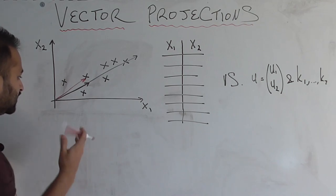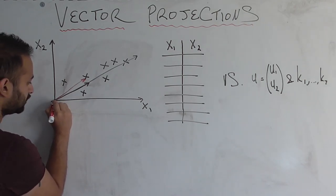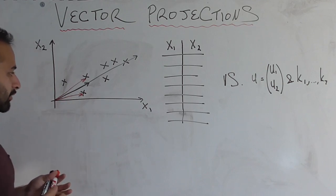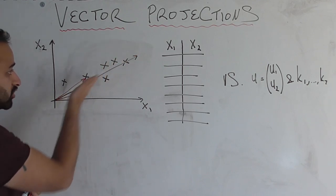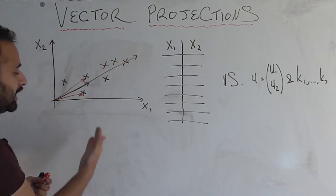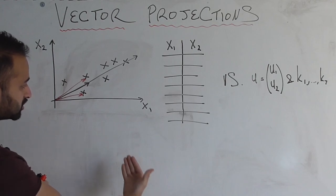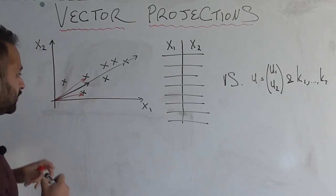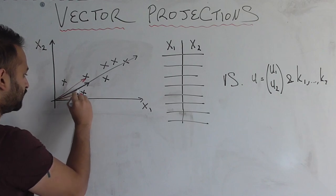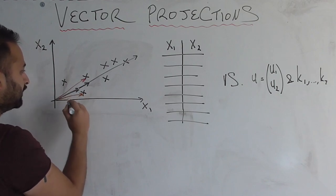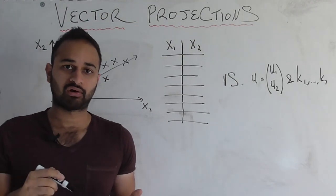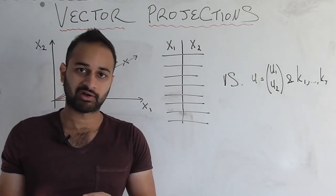And we can do similar things for any other one of these data points. For example, here is another data point representable by this red vector, and let's say we want to project that red vector onto the original black vector. Imagine a light source coming from down here, and we see that the projection we get is a shorter version of the original black vector.